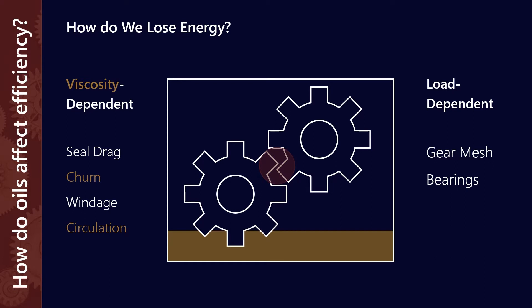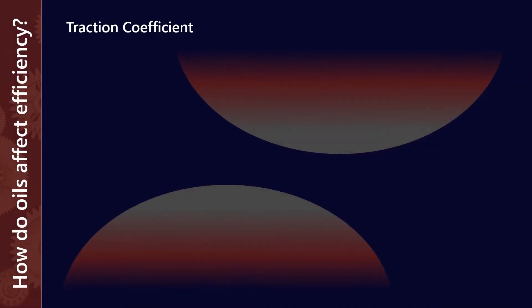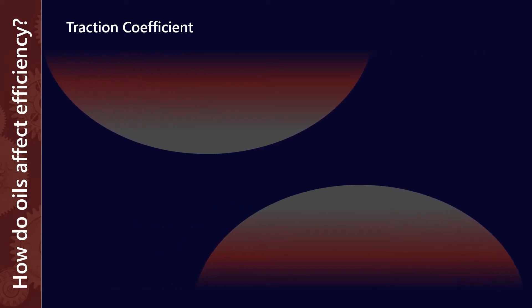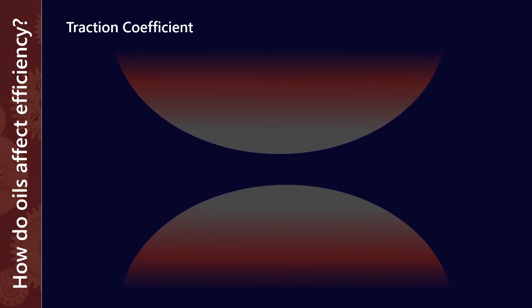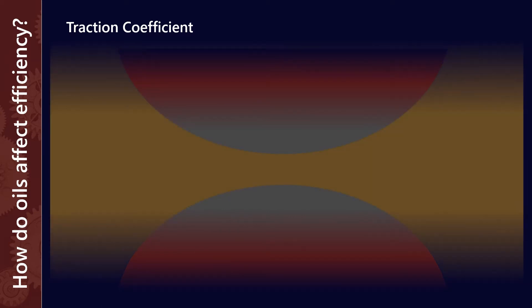For the load-dependent ones, we really need to investigate what happens at the gear mesh, at the interaction between those gear teeth. And this comes down to something which we call the traction coefficient. If you can imagine two surfaces that are trying to slide past each other, gear teeth for example, what actually separates the gear teeth is a volume of lubricant. That lubricant has to get forced through a really narrow gap, so it's supporting the load.